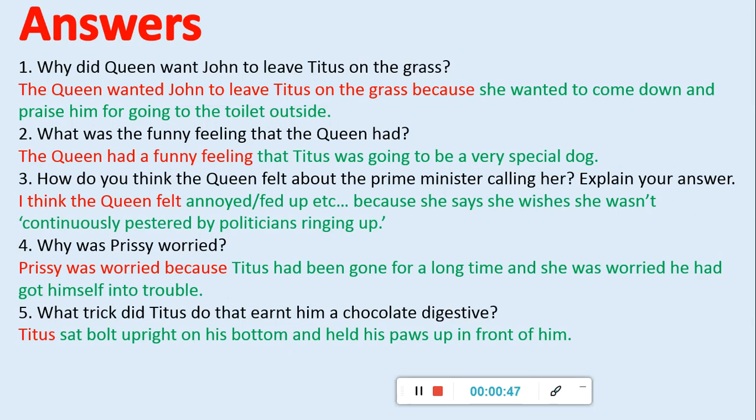Okay, your answers are there for you. The Queen wanted John to leave Titus on the grass because she wanted to come down and praise him for going to the toilet outside. The funny feeling she had was that Titus was going to be a very special dog. I think the Queen felt annoyed, fed up, because she wishes she wasn't continuously pestered by politicians ringing up. Prissy was worried because Titus had been gone for a long time and she was worried he had got himself into trouble. The trick was that he sat bolt upright on his bottom and held his paws up in front of him. Hope you found those okay, guys. Any problems, just send me an email.